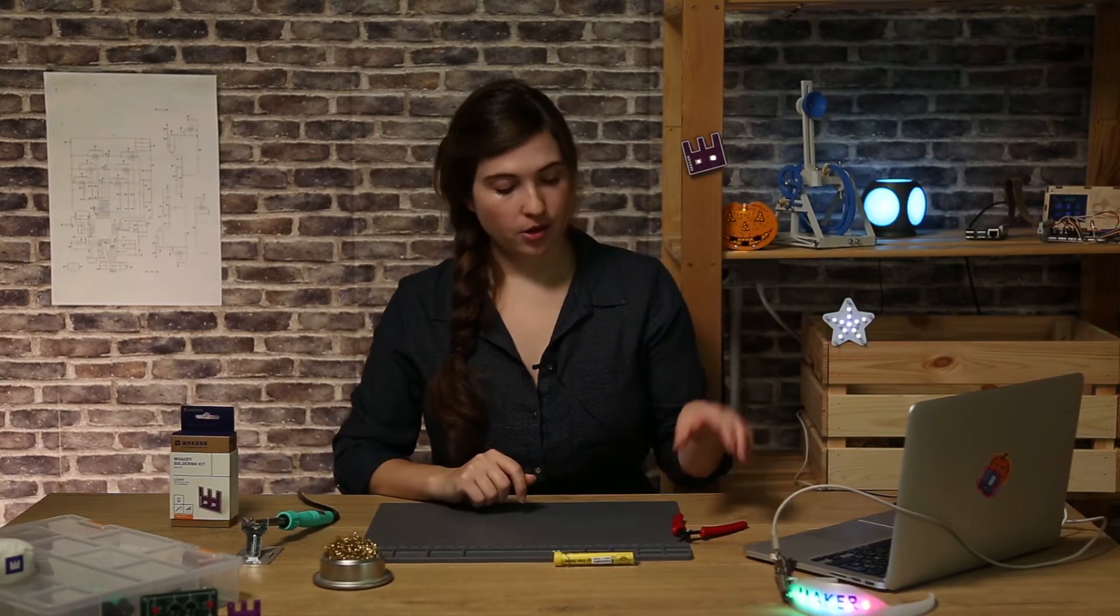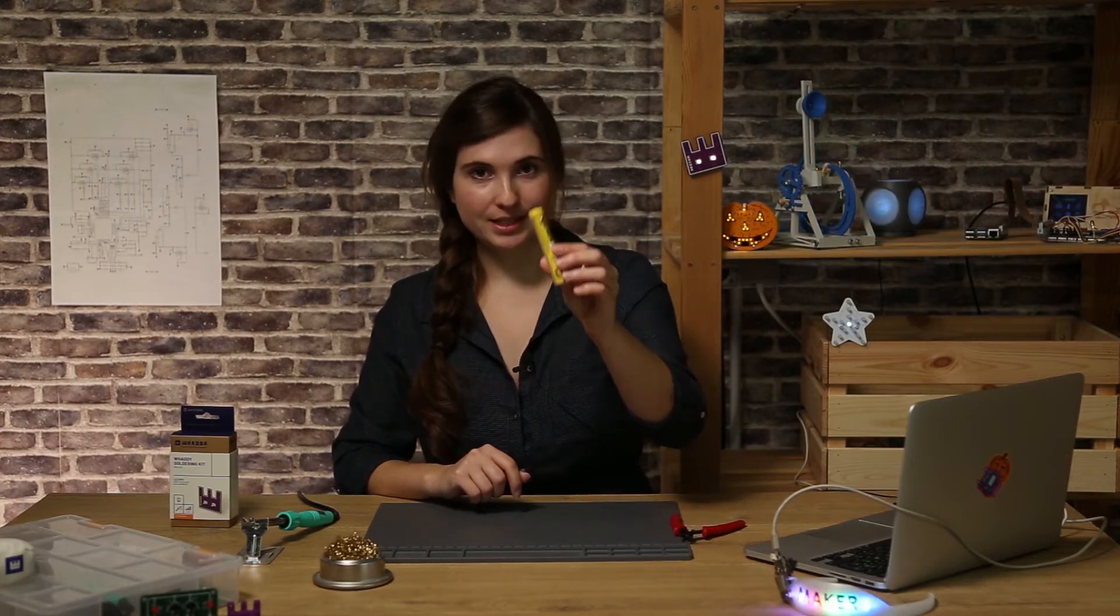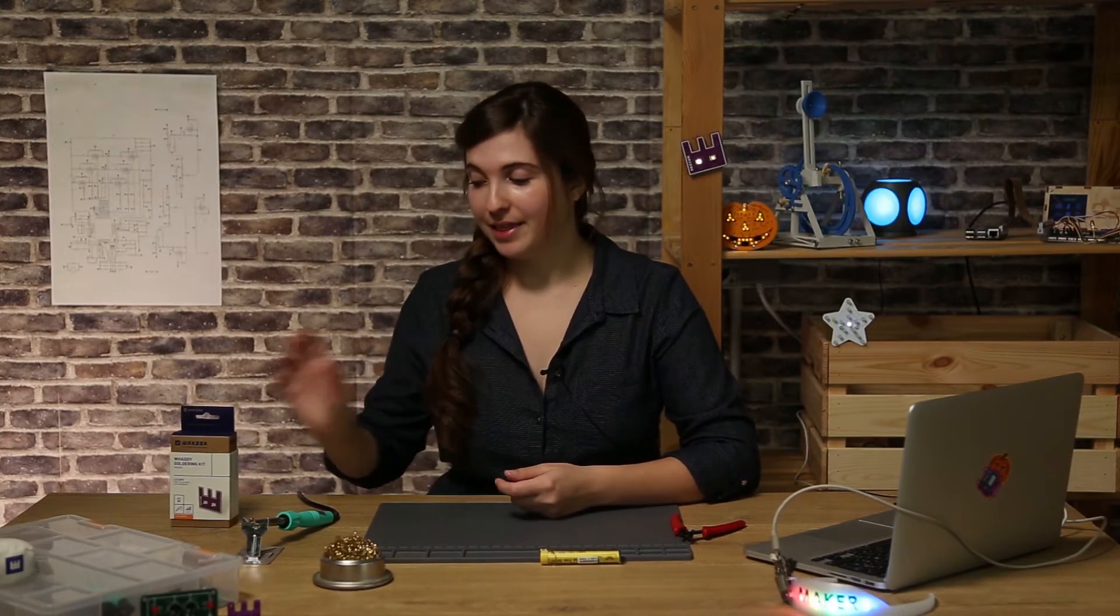Now I'll show you everything you need to start soldering. First up you'll need your soldering iron and a holder. You'll also need pliers, soldering tin and a sponge to clean your soldering iron. You can also use a regular sponge but make it wet. Lastly of course we'll need our kit with all its components. And if you want to protect your table you can also use an anti-static placemat.